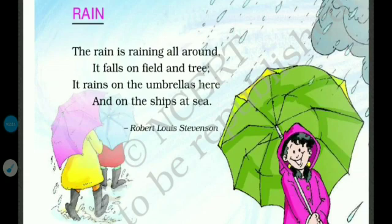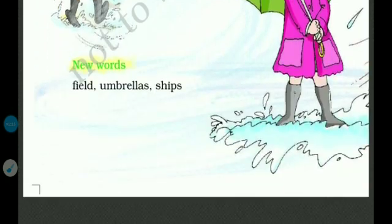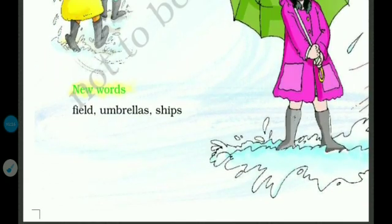This is a small poem. You have to learn this poem for homework. Now let's go to the new words. The first word is field — it means land. The second word is umbrellas. The third word is ships.